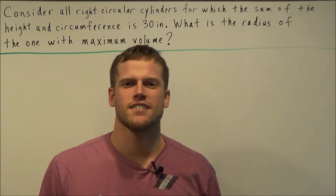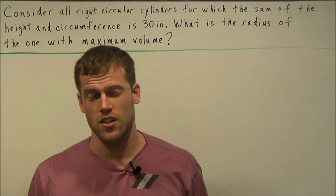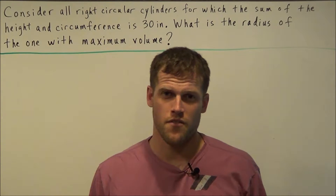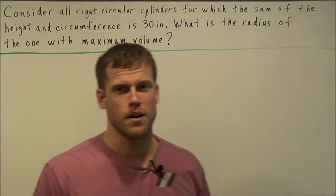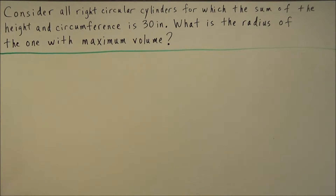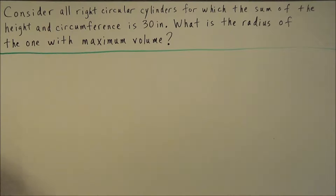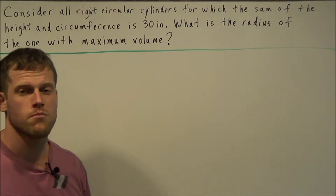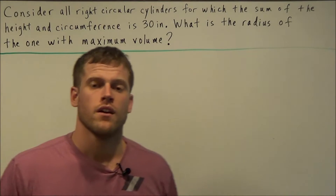Hi, my name is Vincent and today I want to take a look at how to solve optimization problems. Consider all right circular cylinders for which the sum of the height and circumference is 30 inches. What is the radius of the one with maximum volume?